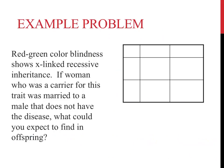The example problem on this slide reads: red-green colorblindness shows X-linked recessive inheritance. If a woman who is a carrier for this trait is married to a male that does not have the disease...